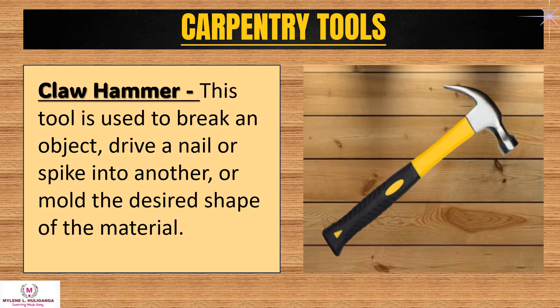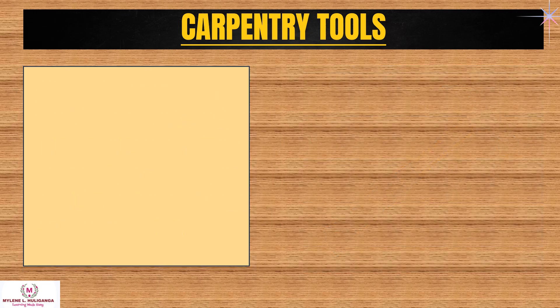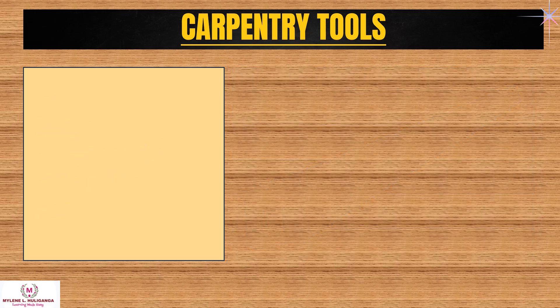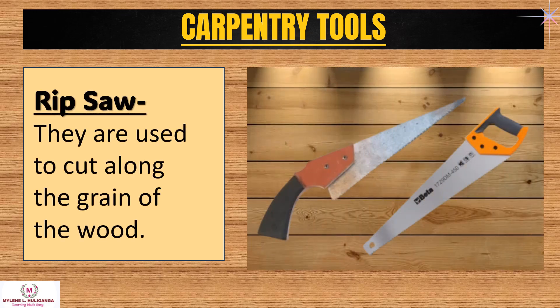Claw hammer: this tool is used to break an object, drive a nail or spike into another, or mold the desired shape of the material. Crosscut saw: used to cut across the grain of the wood. Rip saw: used to cut along the grain of the wood.